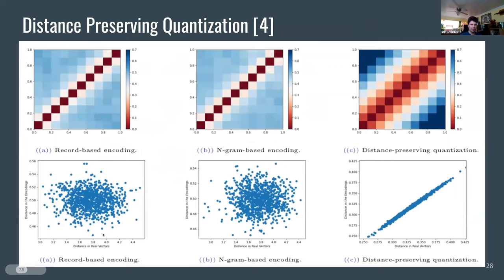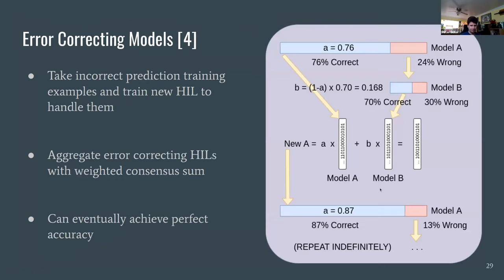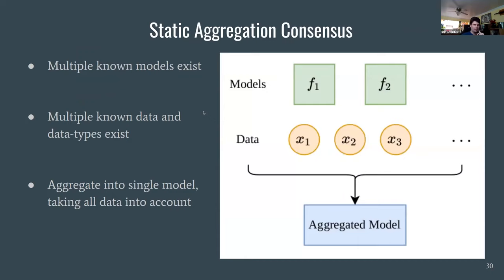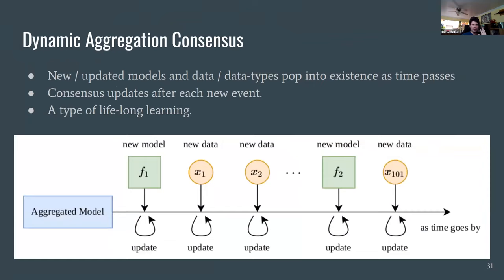Distance-preserving quantization concatenates representations of the real weight vectors for each component together into one hypervector, which is very good at preserving distance — you get a nice straight line in the distance plot. You can also train more models to correct errors, eventually reaching 100% performance on the dataset. For example, if your first model achieves 76% accuracy, a new model trained on those errors reduces the error rate to about 16% of the original, and you repeat until there are no training errors.